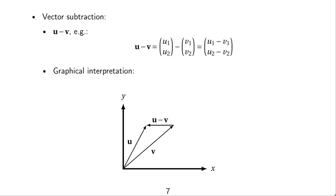Vector subtraction is analogous — it also works dimension-wise. For example, the first dimension is the first element of u minus the first element of v. Graphically, you start at the origin and draw both vectors u and v from the same point. Then u minus v goes from the tip of vector v to the tip of vector u.